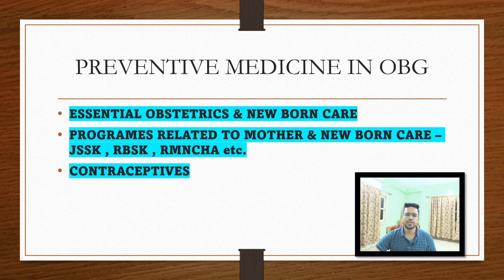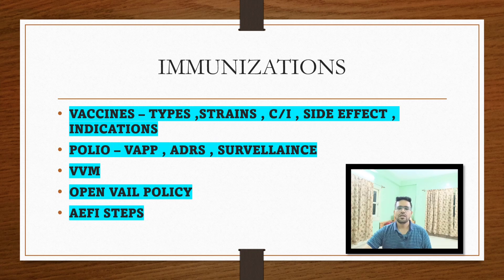For preventive medicine in OBG, you have to read essential obstetrics and newborn care and programs related to mother and newborn care. This is a very important topic — definitely two to three questions will come this year also. Read about Janani Suraksha Yojana, JSSK (Janani Shishu Suraksha Karyakram), RCH, and about contraceptives.